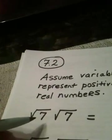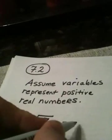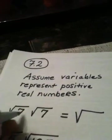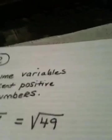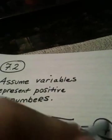Let's use the product rule. A square root times a square root gives me a square root. 7 times 7 is 49, and then the square root of 49 becomes 7.